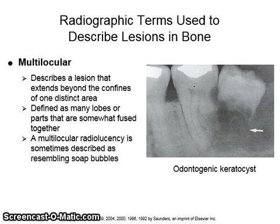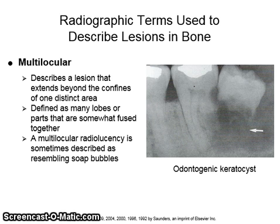Multilocular describes a lesion that extends beyond the confines of one distinct area. It is defined as many lobes or parts that are somewhat fused together. A multilocular radiolucency is sometimes described as resembling soap bubbles. The radiograph on the right shows a multilocular radiolucency from an odontogenic keratocyst.